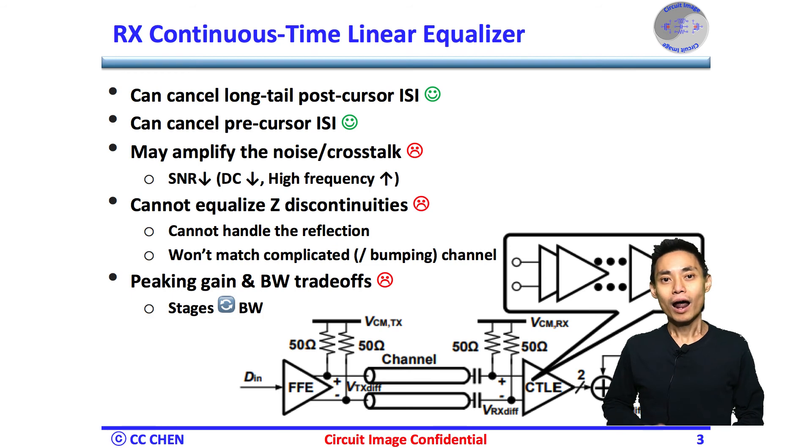However, there are still a few CTLE weaknesses. First, it may amplify the high-frequency noise or crosstalk by throwing the DC content away. The signal-to-noise ratio SNR will drop significantly due to the high-frequency noise amplification. The second constraint is that the CTLE can only equalize a smooth frequency response, not a complicated or bumping channel with discontinuities.